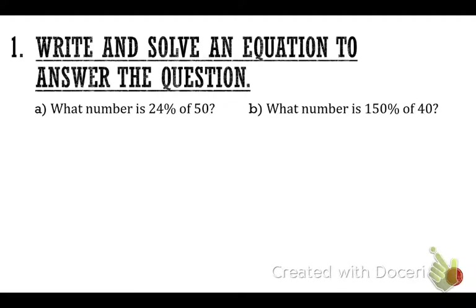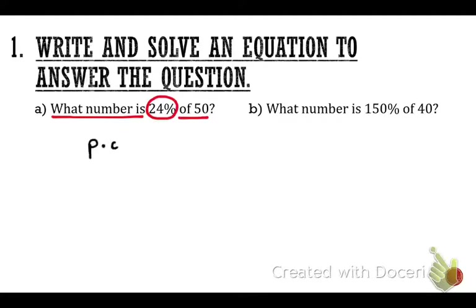Number one asks us to write and solve an equation to answer the question. Problem A: what number is 24% of 50? We're going to separate it — underline 'what number is,' circle 24% for the percent, and underline 'of 50.' Now start with our new formula from today: p times of equals is.